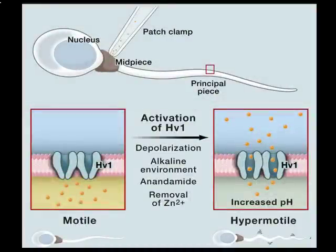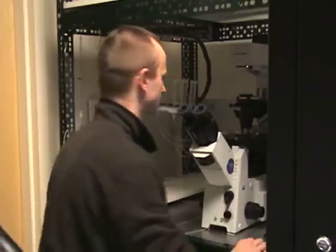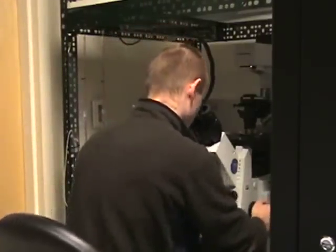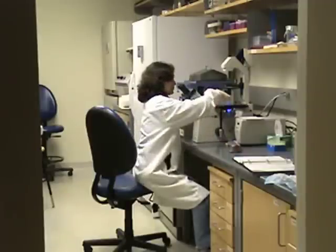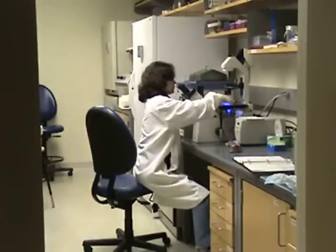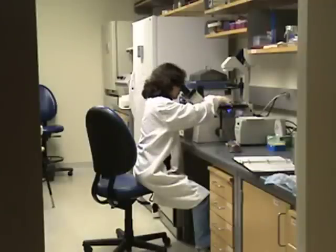In conclusion, by combining electrophysiological, biochemical, and molecular biological techniques, we found that human sperm cells possess a voltage-gated proton channel HV1. Activation of HV1 by voltage, alkaline extracellular environment, anandamide, and removal of extracellular zinc should lead to functional activation of the sperm cells. The whole cell patch clamp technique reported in this study significantly advances our ability to analyze the mechanism of human fertility. The importance of HV1 for sperm activation makes it an attractive target for controlling male fertility.